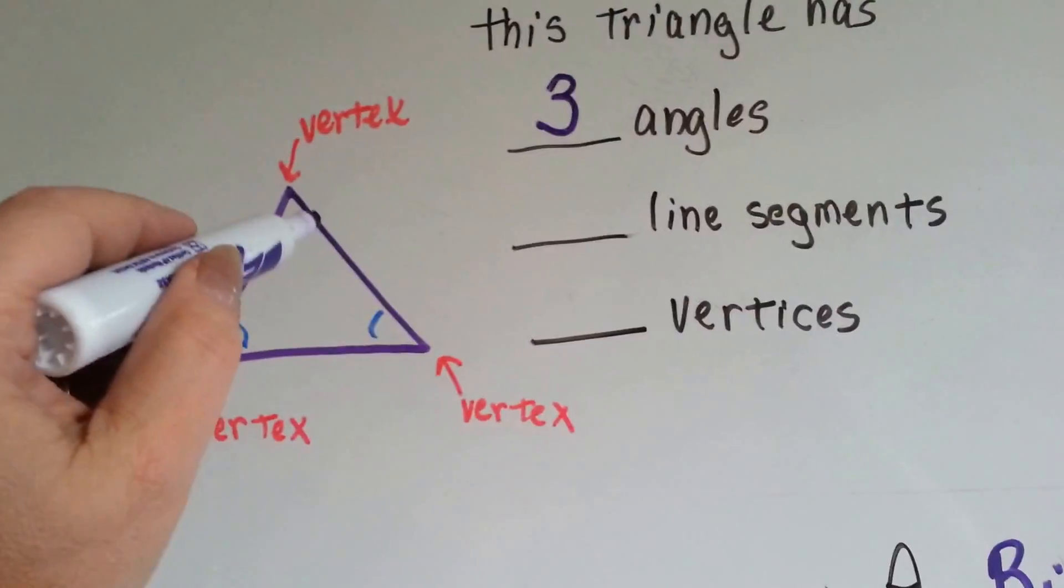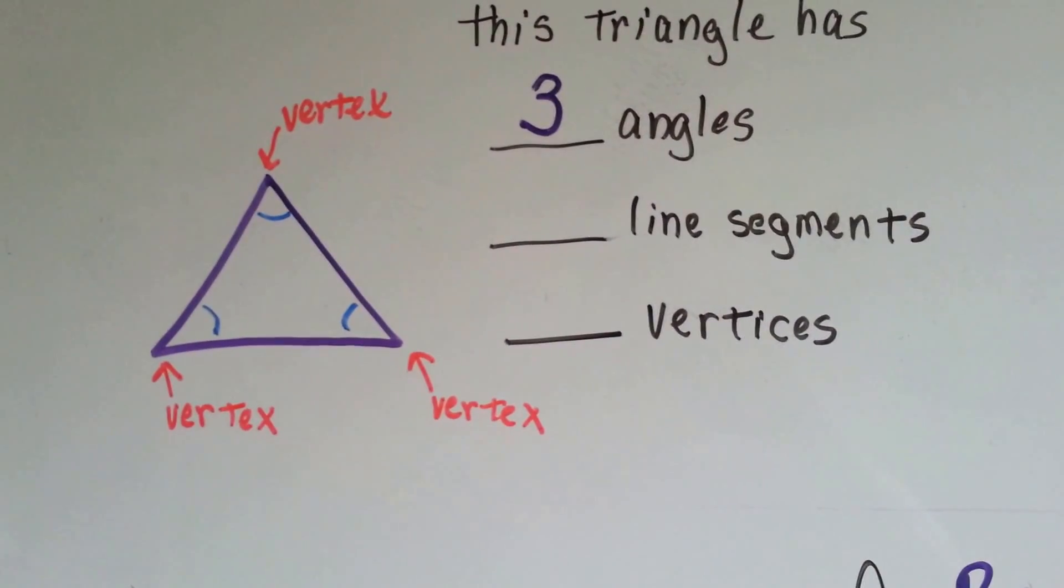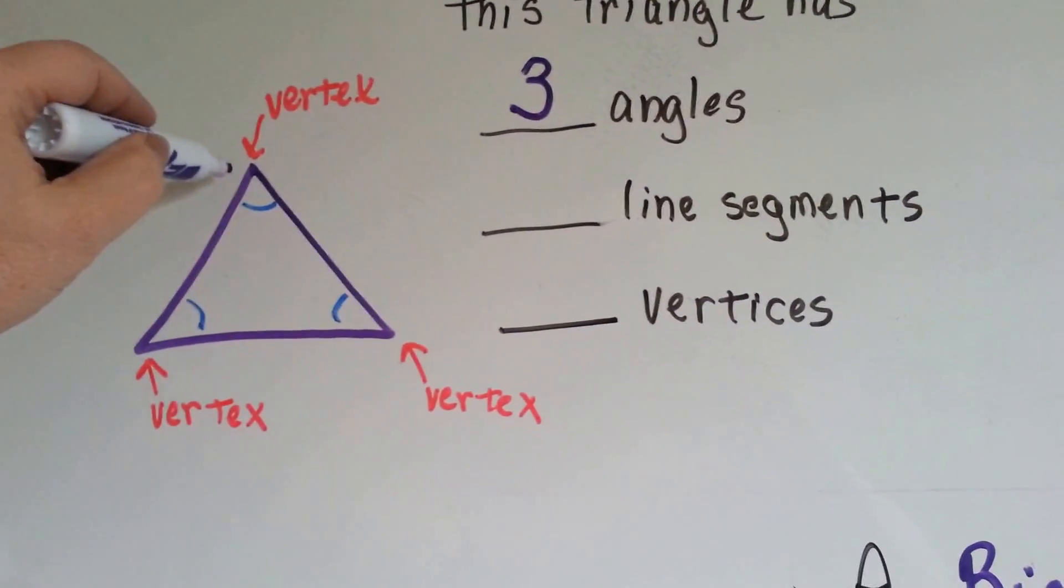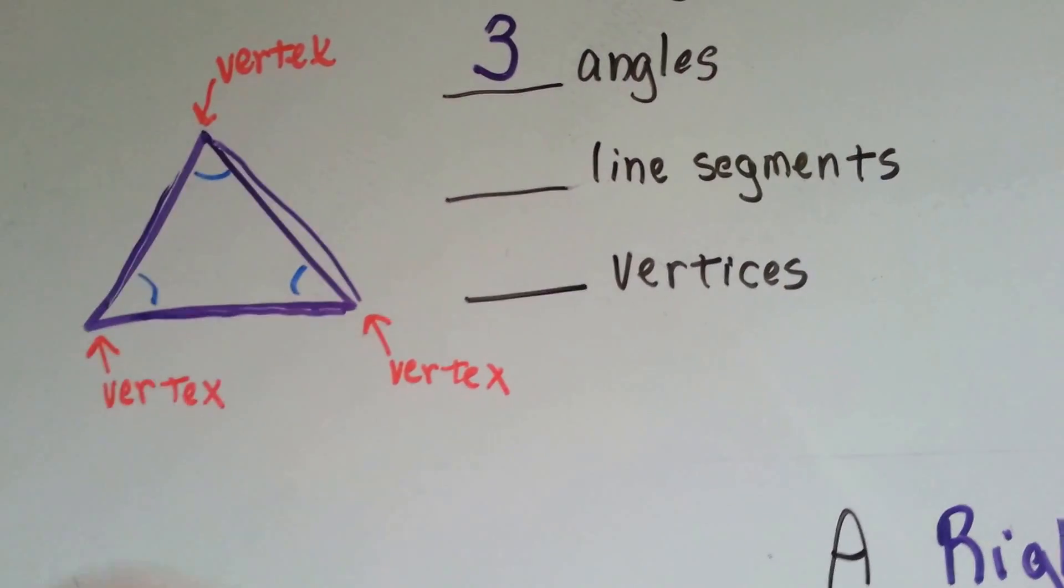Can you see them? One, two, three. How many line segments are in the triangle? There's one line segment, two line segments, three line segments.